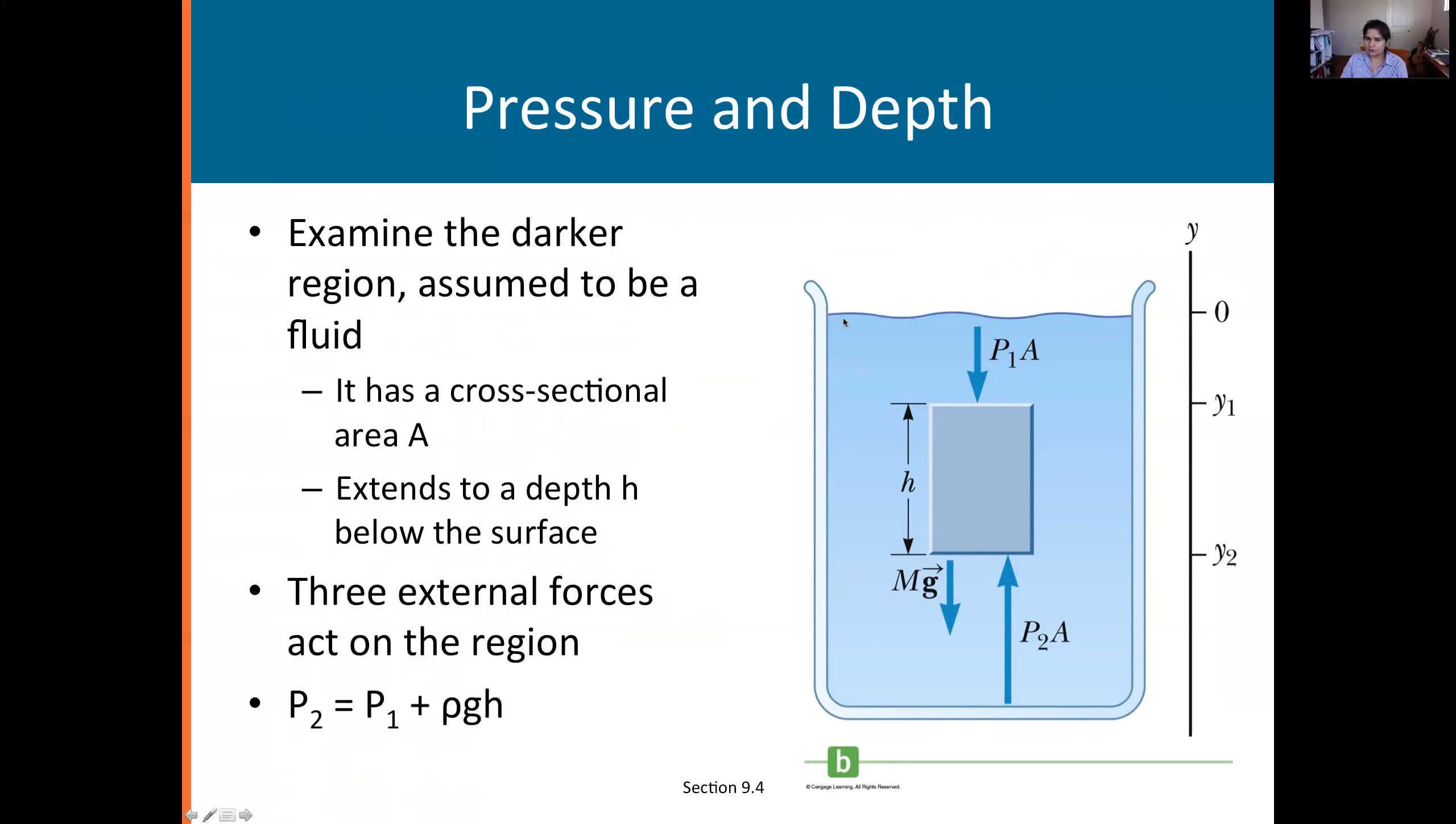If the pressure here was slightly different from there, there would be a flow from the high pressure to the low pressure. So let's say it's in equilibrium, then the pressures have to balance out.